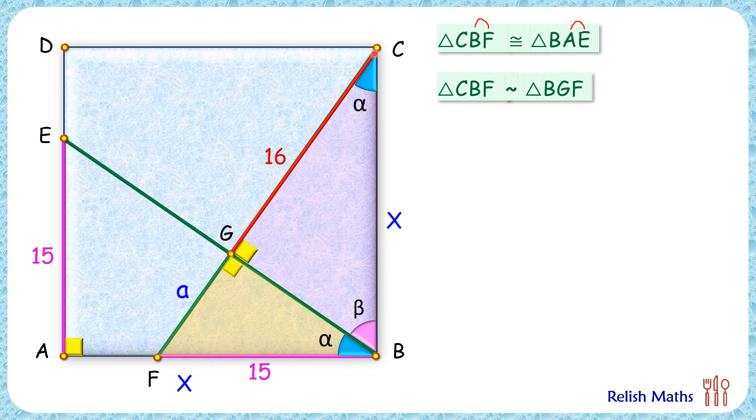In CBF we have alpha degrees and angle B is 90 degrees, and in BGF we have this alpha and 90. Thus by angle-angle similarity, both triangles are similar to each other, and thus the ratio of corresponding sides will be equal.